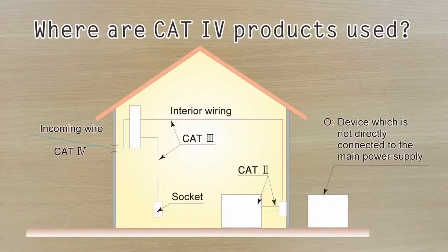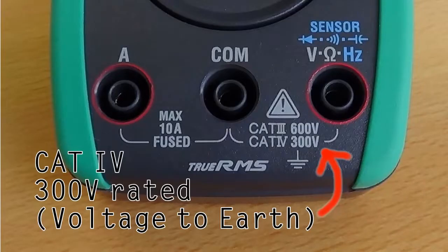It is important to choose the correct meter for your particular working environment. Because the KEW1021R has a category 4 rating, it can be used safely even at the point of origin for high energy power sources.